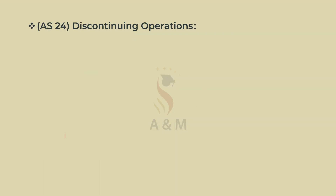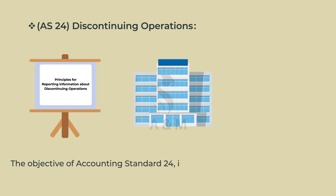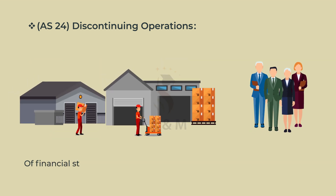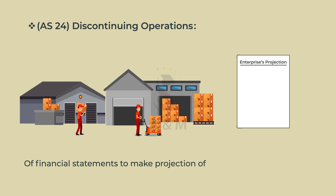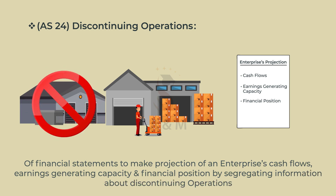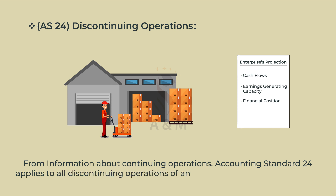Accounting Standard 24: Discontinuing Operations. The objective of Accounting Standard 24 is to establish principles for reporting information about discontinuing operations, thereby enhancing the ability of users of financial statements to make projections of an enterprise's cash flows, earnings generating capacity, and financial position by segregating information. Accounting Standard 24 applies to all discontinuing operations of an enterprise.